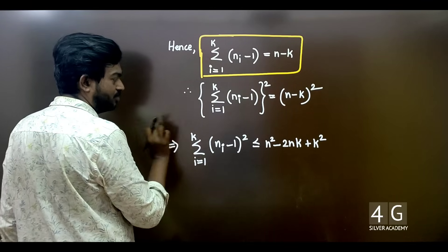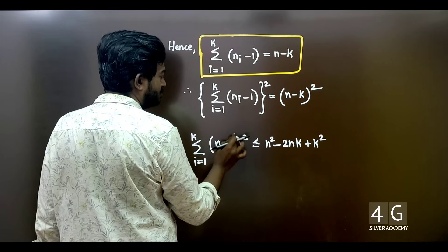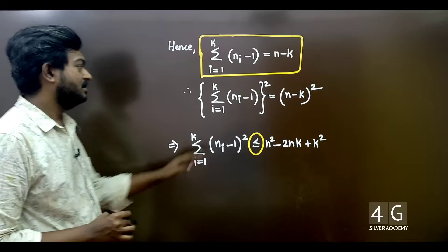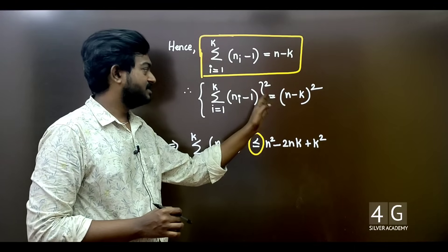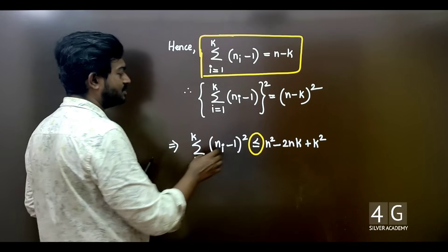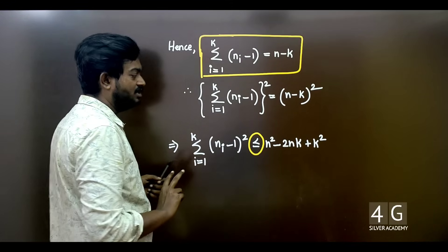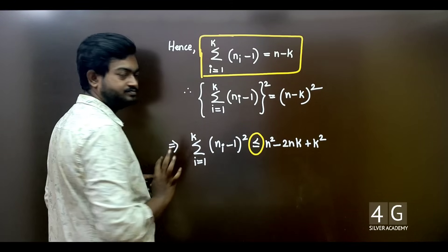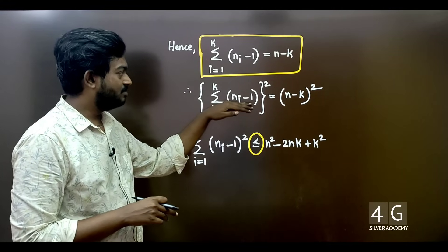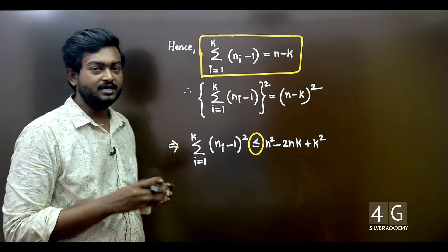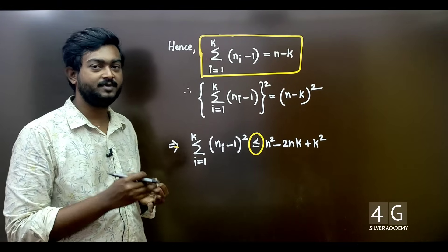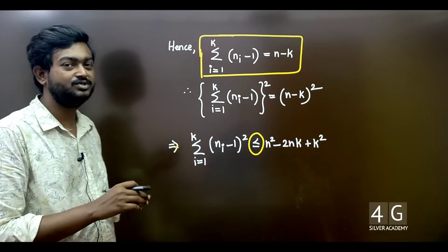Summation i equal to 1 to k of (ni minus 1) whole square — this symbol gives us the inequality. On the right-hand side, the value will be greater. If we expand this using the formula (a+b+c)² = a²+b²+c²+2ab+2bc+2ca, we can proceed.